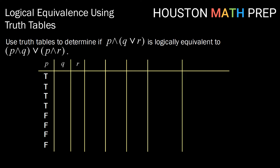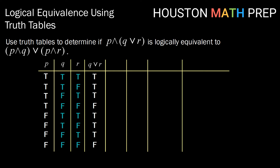For P, we extend to four trues then four falses. For Q, we do true, true, false, false, true, true, false, false. For R, we alternate true, false, true, false, true, false, true, false. That gives us all 8 combinations in an organized manner. Now for Q or R: a disjunction is true any time at least one is true, so we get true, true, true, false, true, true, true, false.